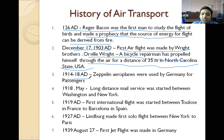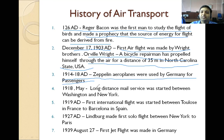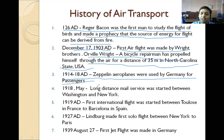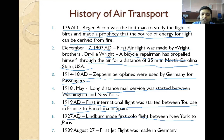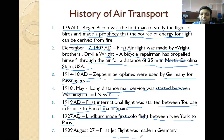In 1914–1918, Zeppelin airplanes were used by Germany for passengers. In 1918, long-distance mail service was started between Washington and New York. In 1919, the first international flight was started between Toulouse in France to Barcelona in Spain. In 1927, Lindbergh made the first solo flight between New York to Paris. On August 27, 1939, the first jet flight was made in Germany.